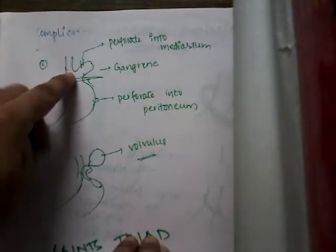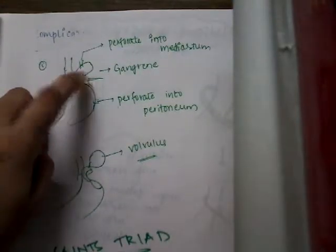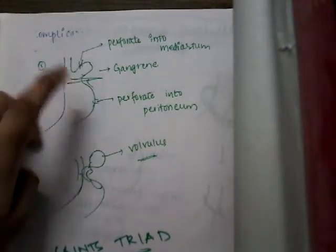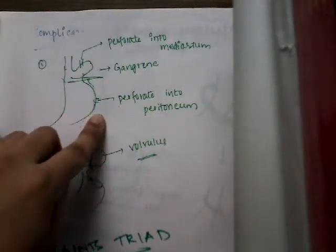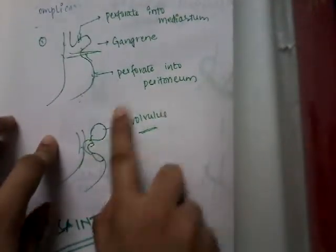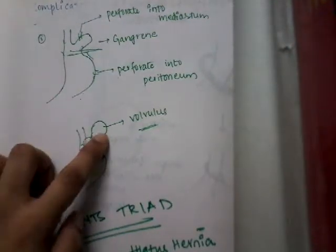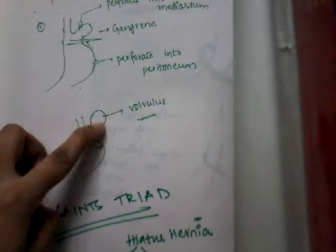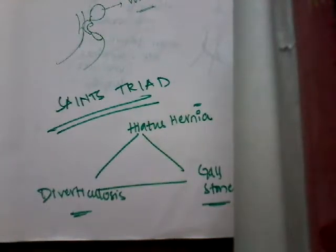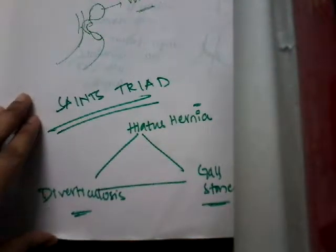Complications of hiatus hernia include compromise of blood supply to the herniated part, leading to gangrene. The herniated part may perforate into the mediastinum or into the peritoneum causing peritonitis. The herniated part may also twist around itself, resulting in volvulus formation. So perforation, gangrene, and volvulus are the main complications.